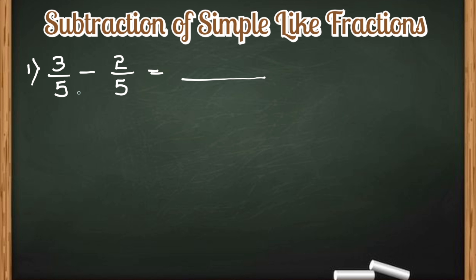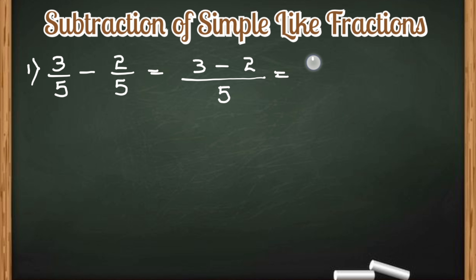If the denominators are the same, in both addition and subtraction, only the numerators will be operated on — in addition only the numerators will be added, and the denominator will remain the same. After subtracting numerators: 3 minus 2 gives 1 in the numerator, and the denominator remains 5. The answer is 1 by 5.